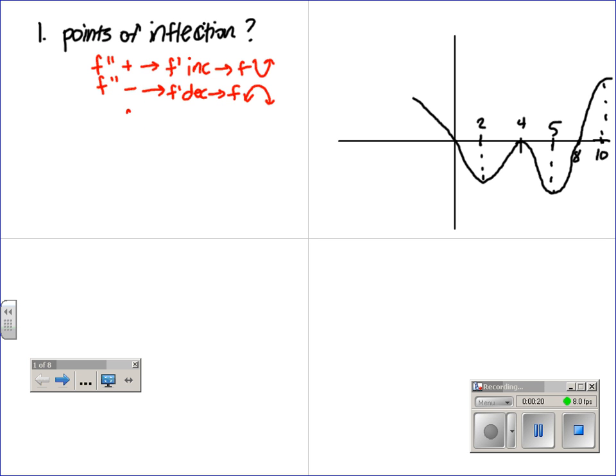Points of inflection is when f double prime changes signs, which is when f prime changes directions, which means you're looking for the maxes and the mins of f prime, because this is f prime. So here, here, here, and here, which means there are four points of inflection, which is d.